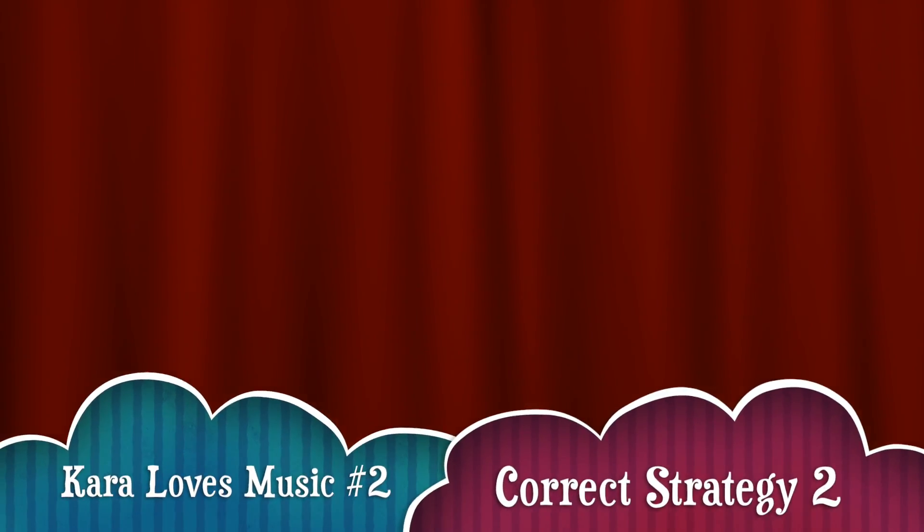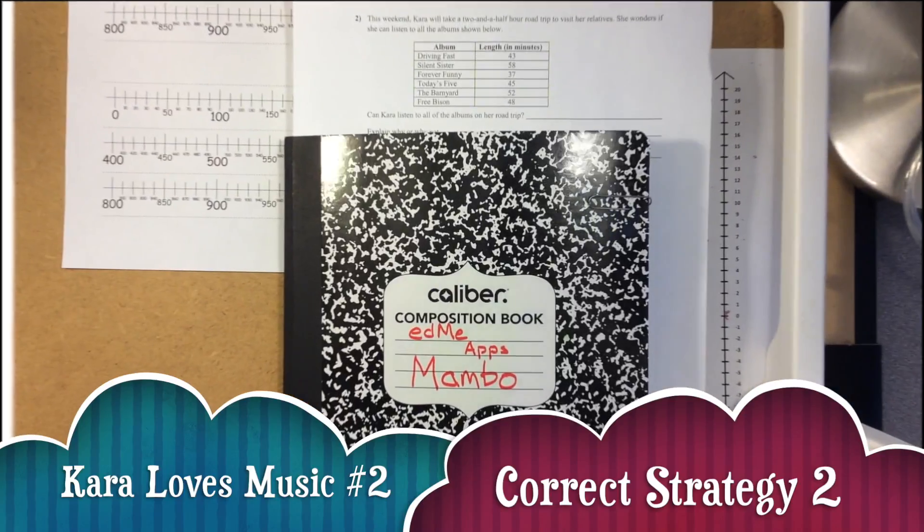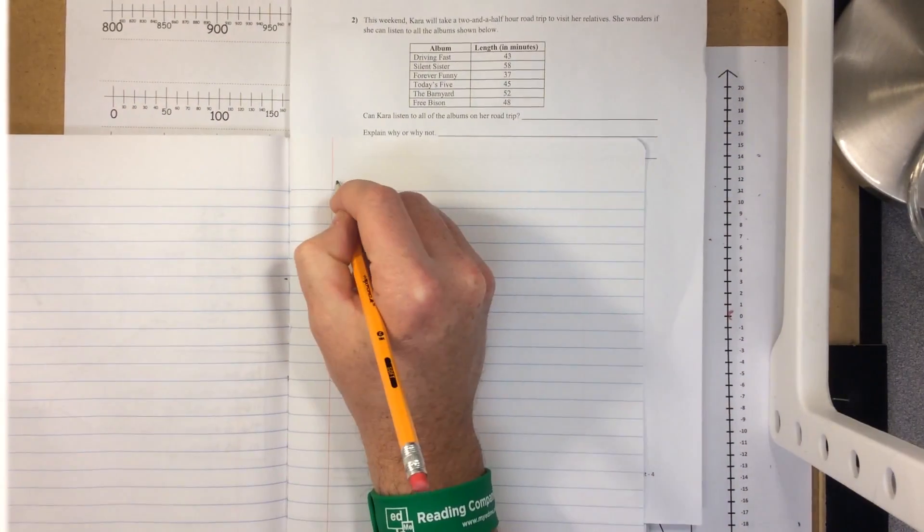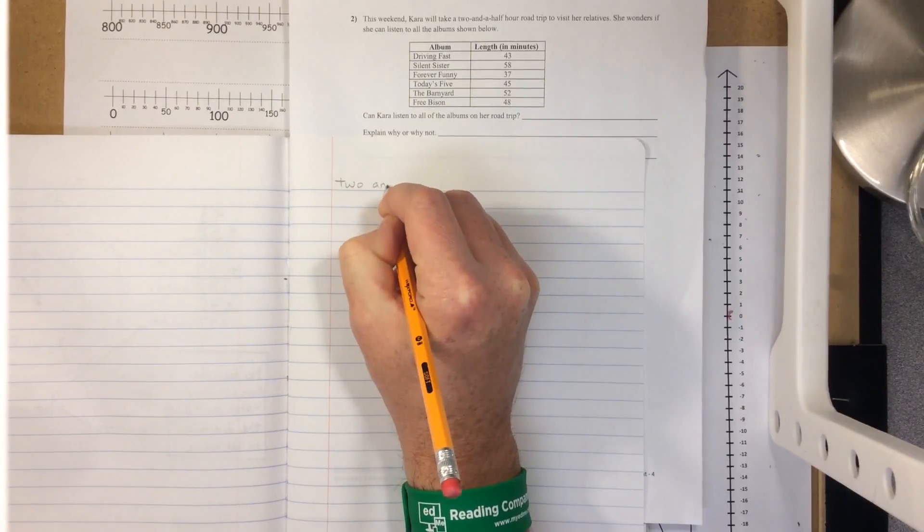This problem is really about comparing time. We can look at different ways to estimate. Some people chose to estimate by comparing one hour or one half hour with individual albums.